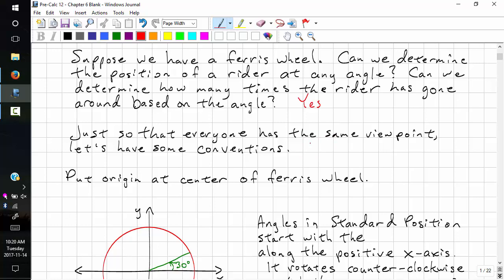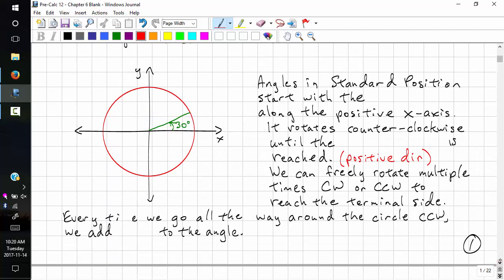We put the origin at the center of the Ferris wheel. Angles in standard position start with the initial side. This is the initial side, along the positive x-axis. It rotates counterclockwise until the terminal side is reached. This is our terminal side.